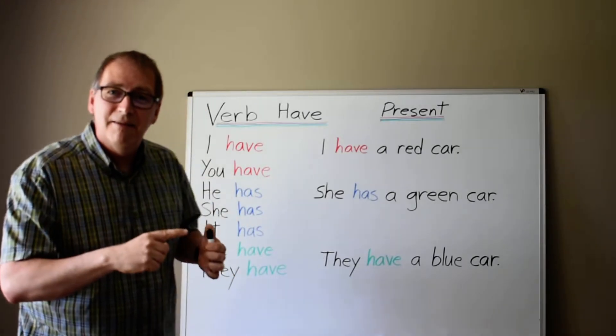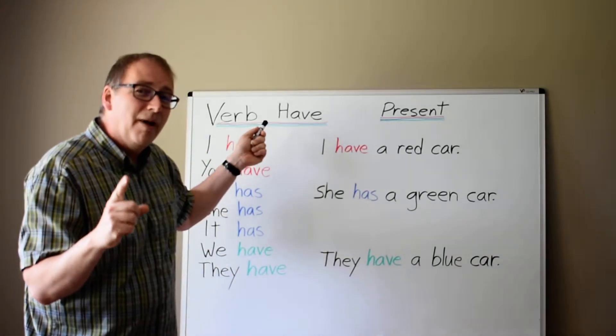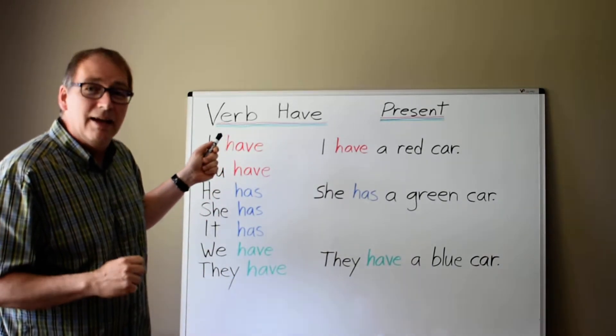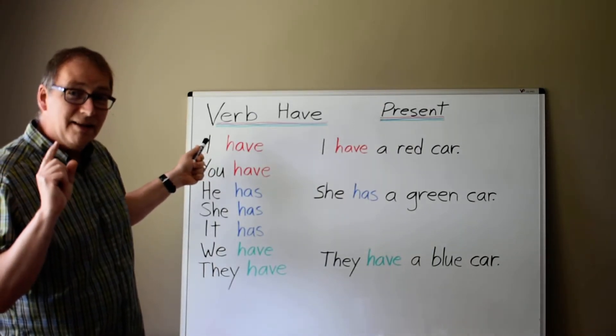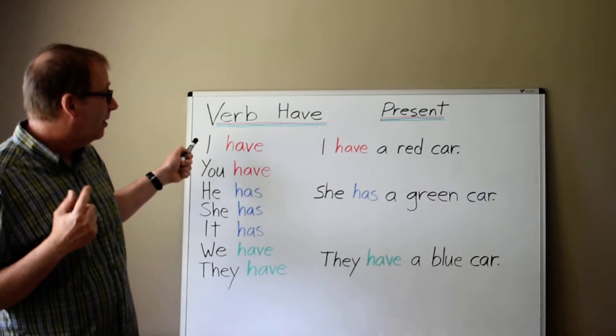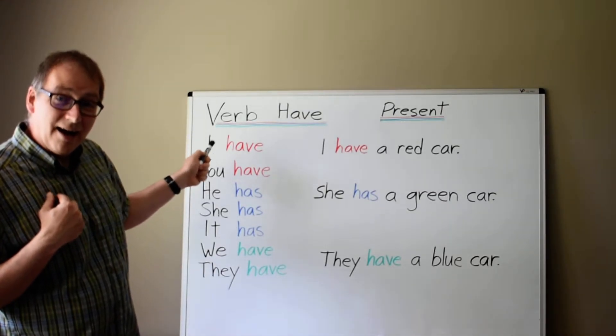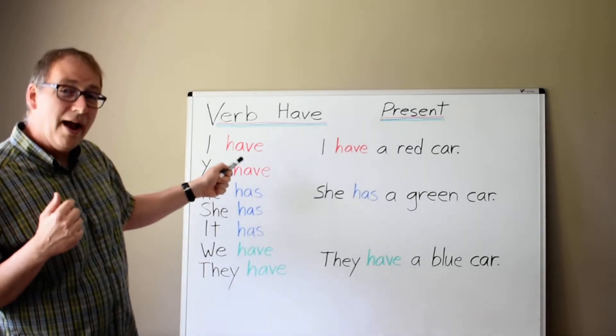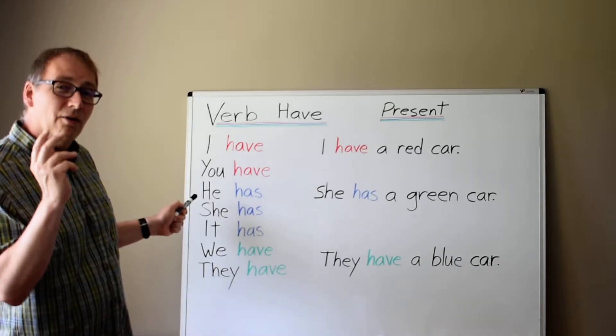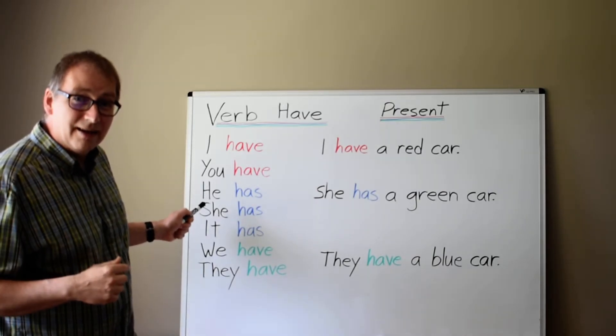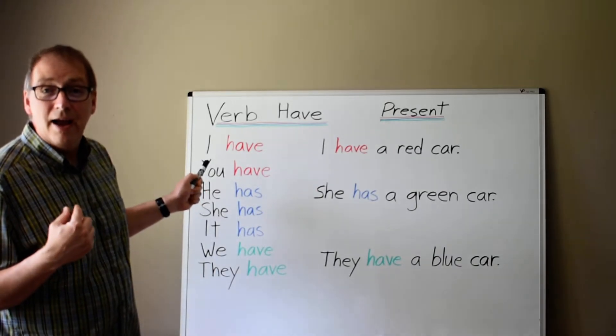Let's see. This verb have in the present, it takes two forms. It stays in the form have with I. I have. You have. But in the third person, he or she or it, it changes to has.